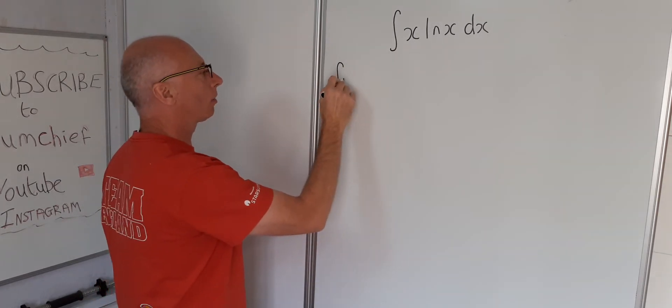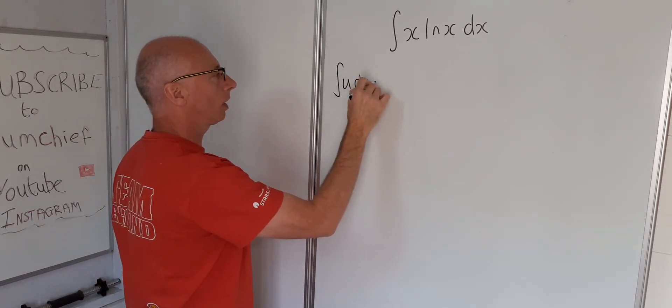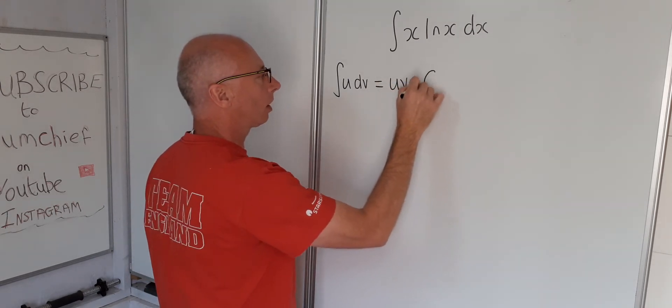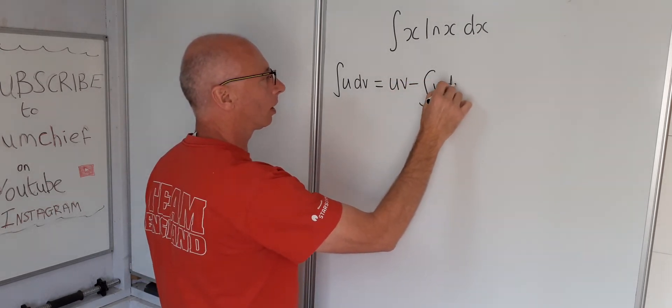So integral of u dv equals uv minus the integral of v du.